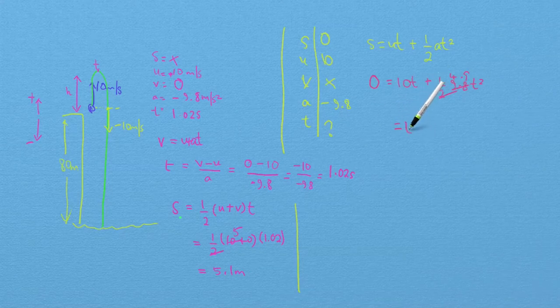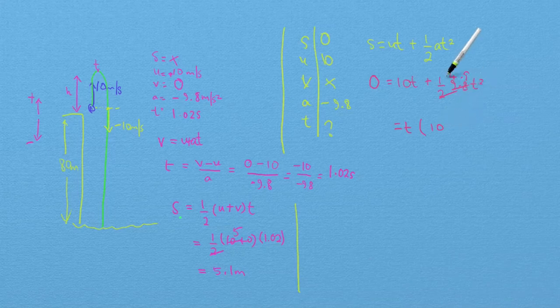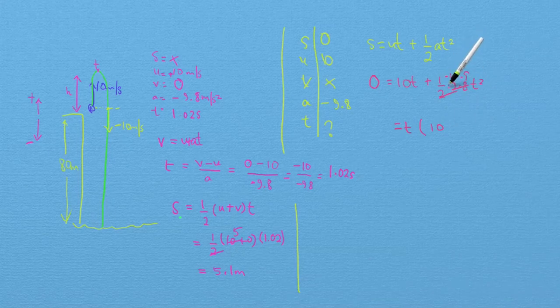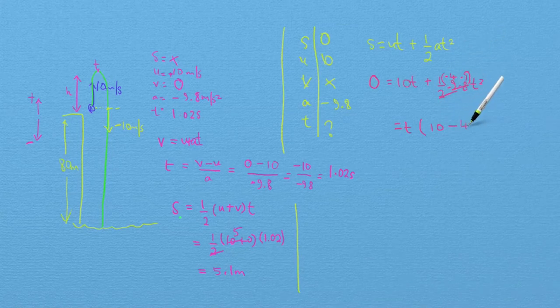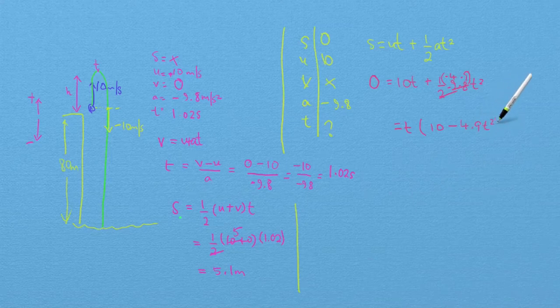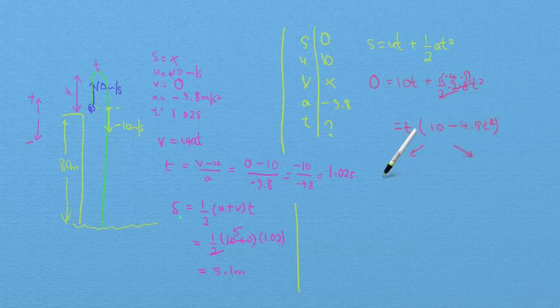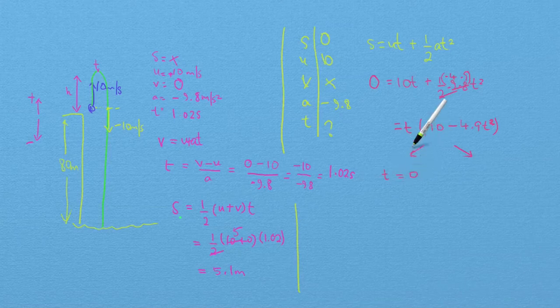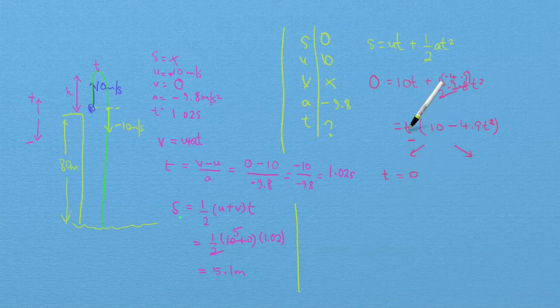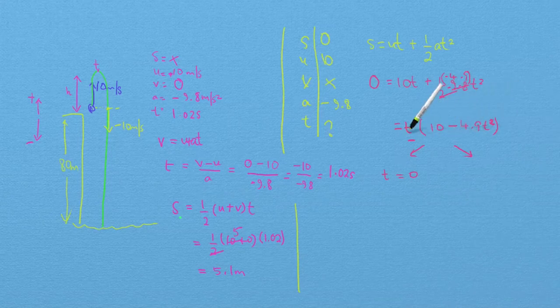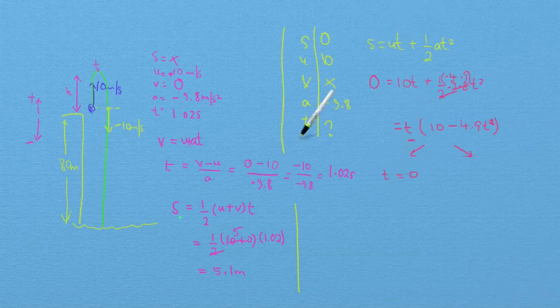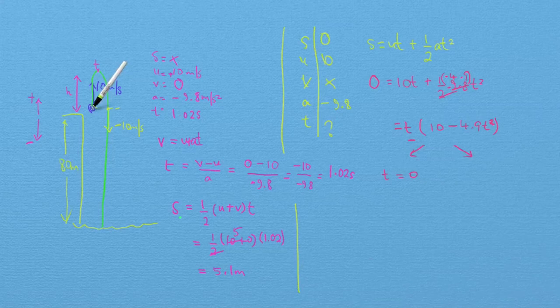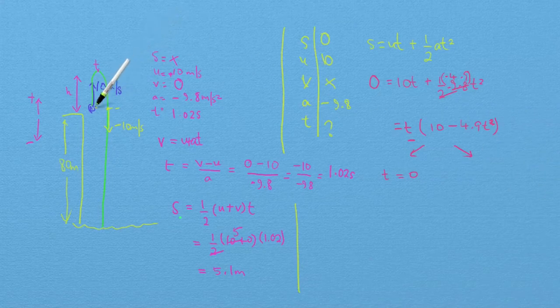This gives 0 equals 10t minus 4.9t squared. And I can factorize this, because t is a common factor. So you're going to get two solutions here. The first solution is t equals zero from that case, because if t is zero, zero multiplied by anything in the parentheses will give me zero. And indeed, that's what we expect, because the first time when the displacement is zero is when it's in my hand right here, right before I release my hand. And the second time is when it comes back round.